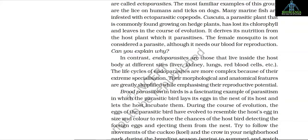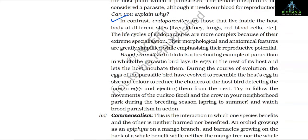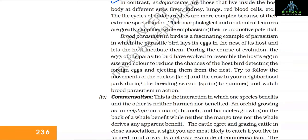Parasites that feed on the external surface of the host organism are called ectoparasites — the most familiar examples are lice on humans and ticks on dogs. Cuscuta, a parasitic plant commonly found growing on hedge plants, has lost its chlorophyll and leaves in the course of evolution and derives its nutrition from the host plant. In contrast, endoparasites are those that live inside the host body at different sites — liver, kidney, lungs, red blood cells, etc. The life cycles of endoparasites are more complex because of their extreme specialization, and their morphological and anatomical features are greatly simplified while emphasizing reproductive potential.